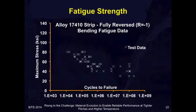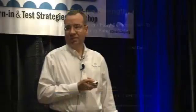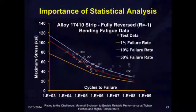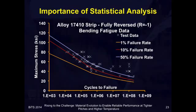What you'll notice is that there is a lot of scatter in fatigue data. So if you want to know how long your contact is going to last at a given stress level, you've got to do some statistical analysis of this fatigue data. What you do in that case is look at all the different failure rates at each stress level, and then perform a statistical analysis on it. In this case, we use a two-parameter Weibull model.